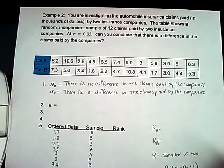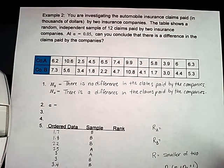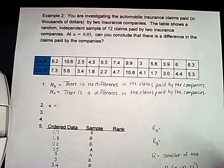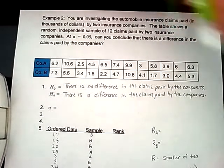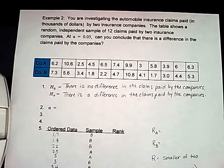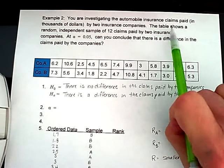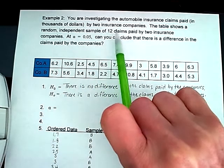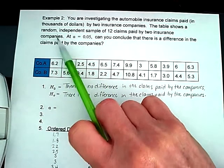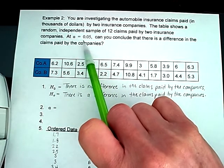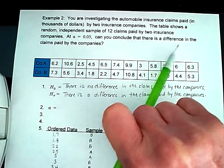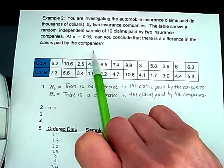For our second example in section 11.2, we're going to look at a Wilcoxon rank sum test. This is another nonparametric test to determine whether two independent samples were selected from populations having the same distribution. We are looking to investigate the automobile insurance claims paid in thousands of dollars by two different insurance companies. The table shows a random independent sample of 12 claims paid by two insurance companies. At alpha equals 0.05, can you conclude that there is a difference in the claims paid by the companies?